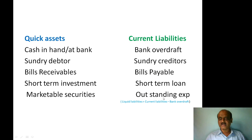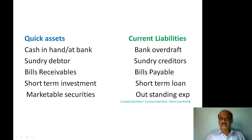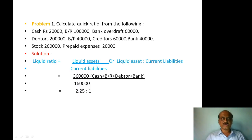Problem: Calculate the quick ratio from the following data — Cash: Rs. 20,000; Bills Receivable: Rs. 1,00,000; Bank Overdraft: Rs. 60,000; Debtors: Rs. 2,00,000; Bills Payable: Rs. 40,000; Creditors: Rs. 60,000; Bank: Rs. 40,000; Stock: Rs. 2,00,000; Prepaid Expenses: Rs. 20,000.